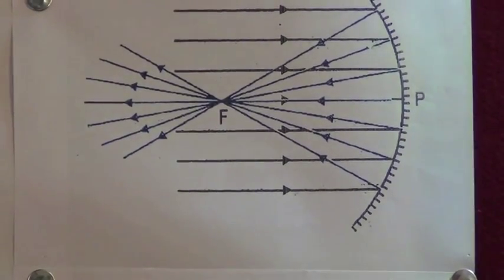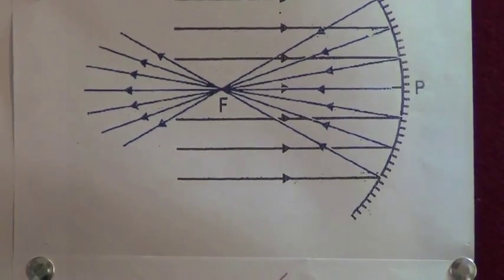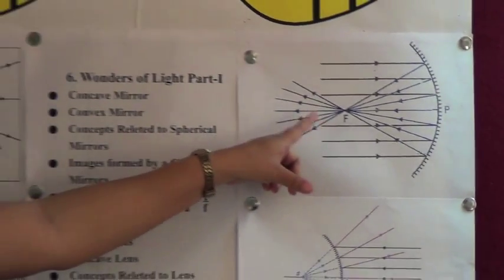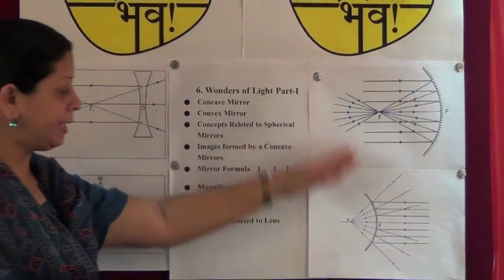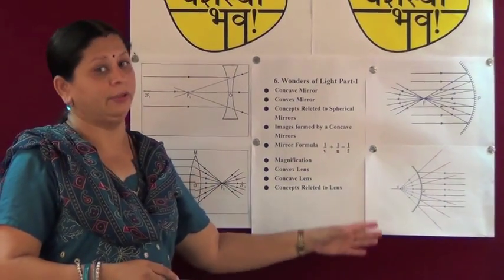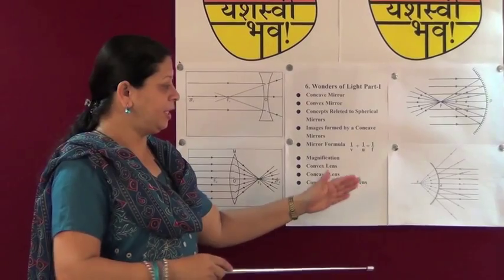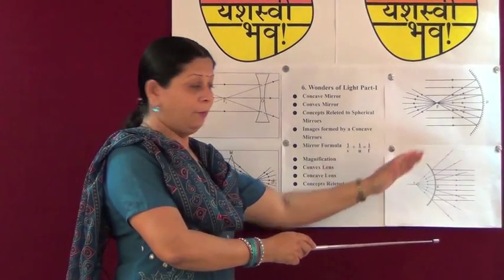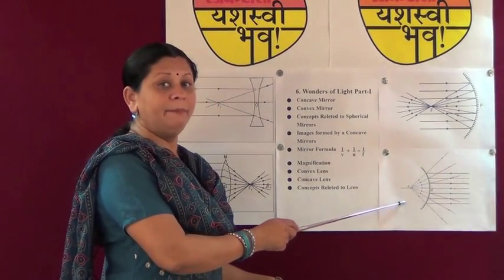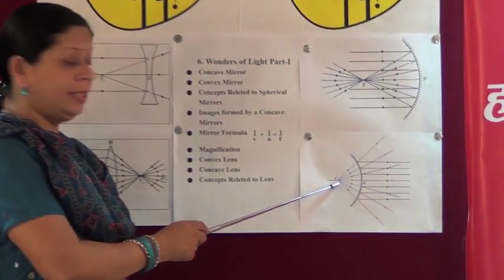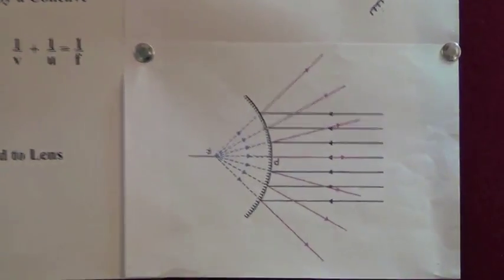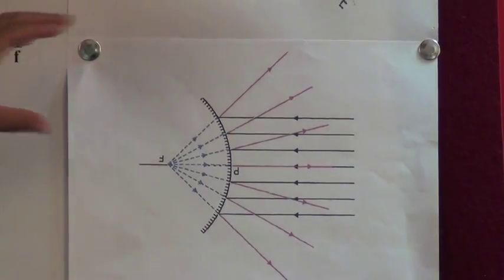For a concave mirror, rays actually meet in one point after reflection. But in the case of a convex mirror, rays do not meet each other after reflection — they are spread over. So, behind the mirror, we assume a point where rays appear to be meeting, and that is called the principal focus of the convex mirror. But it is not an actual focus point; we assume that after reflection, rays appear to meet there.